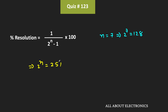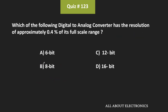Therefore, to get the value of 251, the value of n has to be equal to 8. Or using the conventional method, the value of n comes out as approximately 7.97. That means the required resolution of the DAC has to be equal to 8 bits. Therefore, for an 8-bit DAC, the resolution is approximately equal to 0.4%. So for the given question, option B is the correct answer.